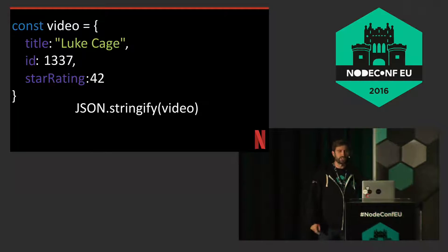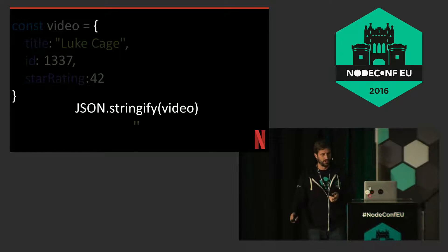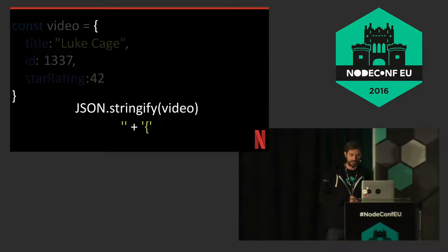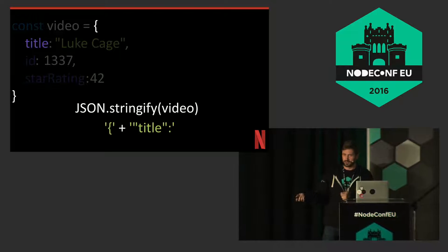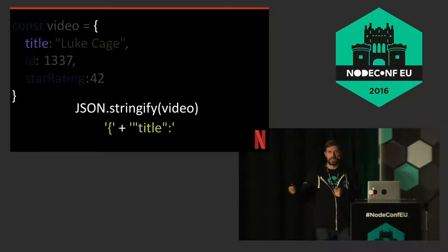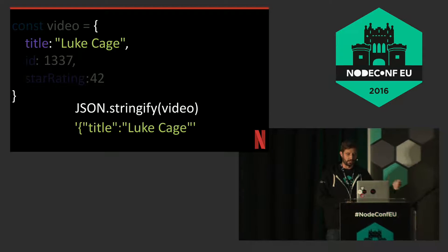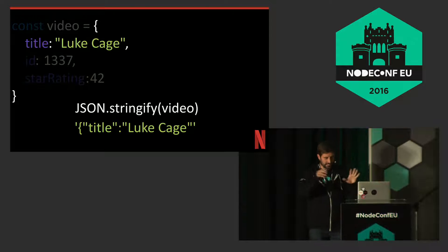When you give JSON.stringify a video, what actually happens is it first type-checks: what am I stringifying? Then it goes from an empty string, adds in the braces, and goes through every single key. It escapes it, making sure there are no double quotes messing up the JSON. Then it goes through every title — there better be commas, there better be colons. Everything gets set up.